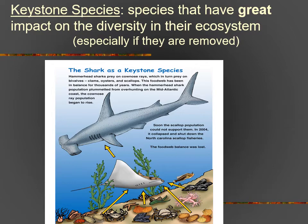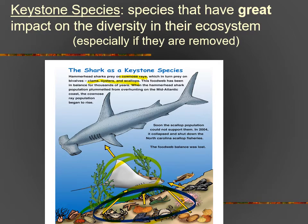Here's another example of a keystone species: hammerhead sharks, which feed upon cow nose rays, which in turn are predators to clams, oysters, and scallops. When we overhunted hammerhead populations, the cow nose rays had no predators to keep their population in check, so their numbers went up. But as their numbers went up, the number of their prey species decreased. Soon we had major issues finding scallops for our own consumption. By overhunting hammerheads, we'd actually hurt ourselves in terms of being able to get scallops. The entire ecosystem started to collapse because it cascaded down upon itself — the keystone, the hammerhead, had been removed, and it could no longer keep the ecosystem healthy.